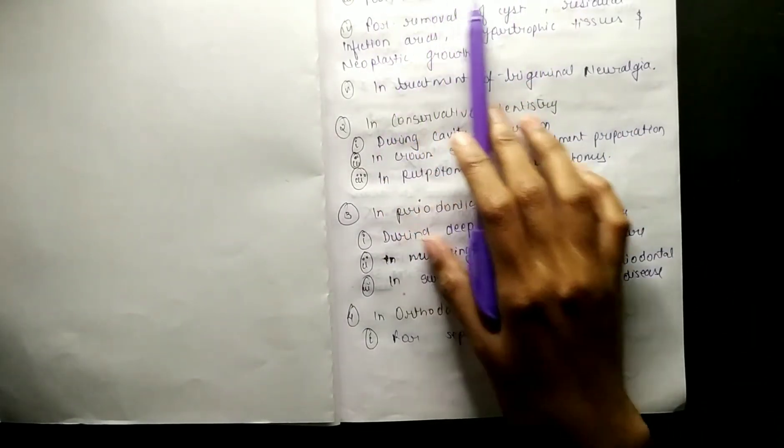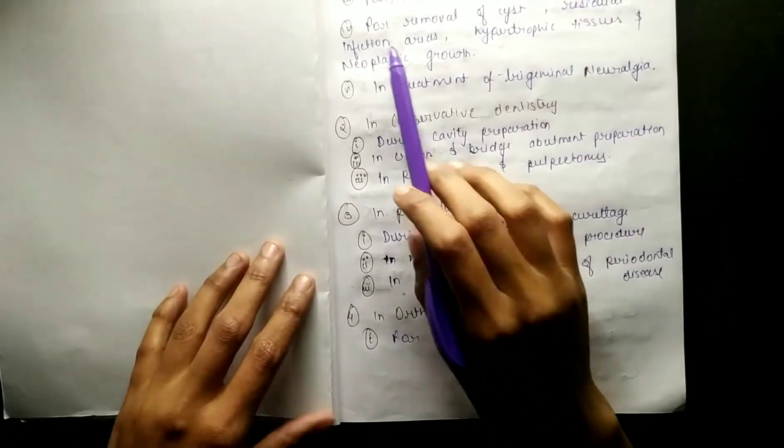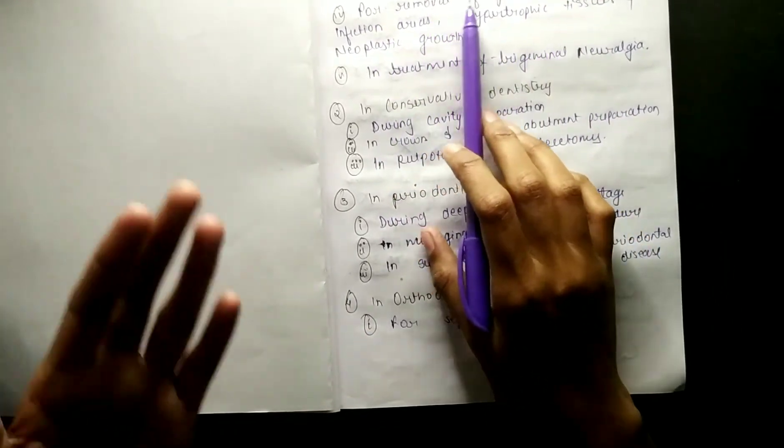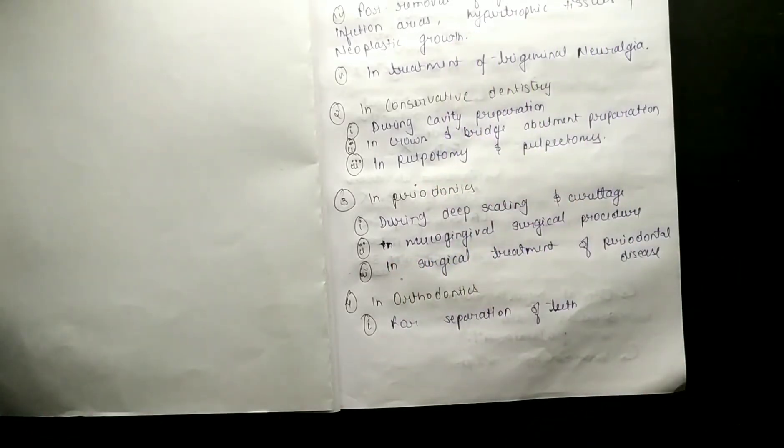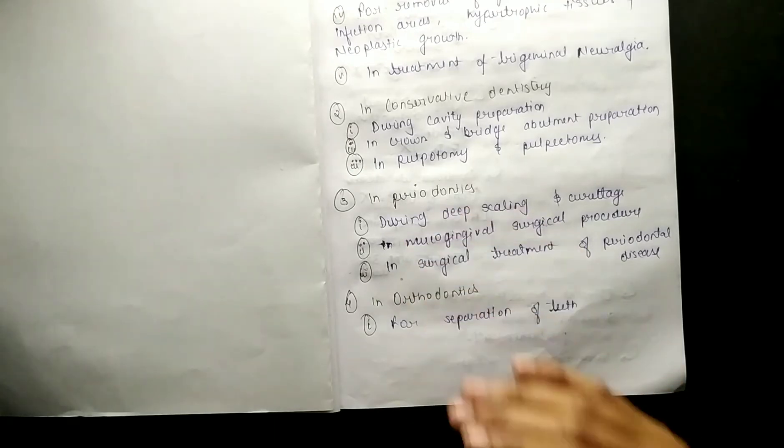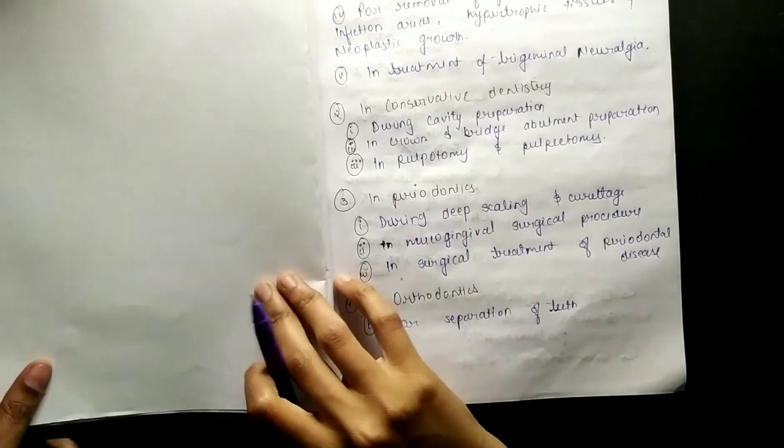Then for incision and drainage of local abscess, for removal of cysts, residual infection area, hypertrophic tissues and neuroplastic growth, and in treatment of trigeminal neuralgia. These are the indications in oral surgery.